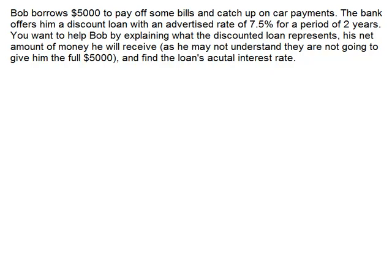He goes to the bank and they offer him a discount loan with an advertised rate of 7.5%. For this video, we're going to say this is a simple interest rate that's quoted, so we're not going to be doing any compounding. They say we'll give you a discount loan with a rate of 7.5% for a period of two years. You're going to pay us back a total of $5,000 in two years time. That's the way the loan works.